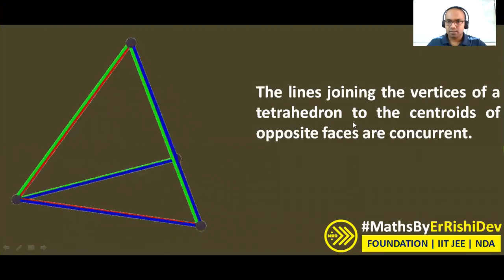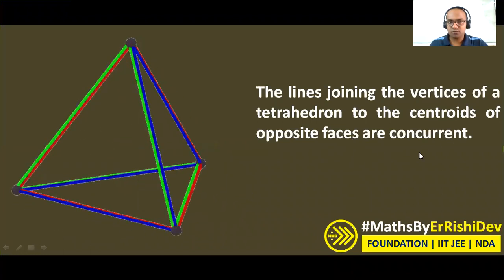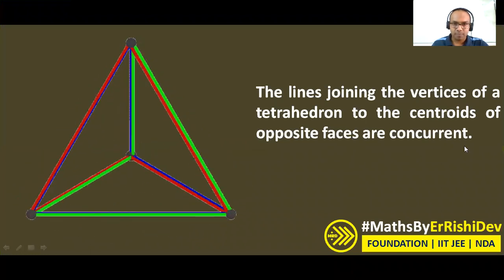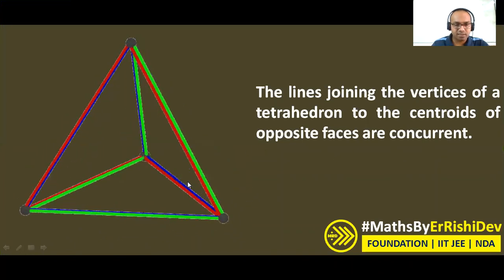This was the question: the lines joining the vertices of a tetrahedron to the centroids of opposite faces are concurrent. Here we have to prove it. First, it is very important to understand how the tetrahedron looks like.